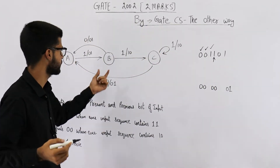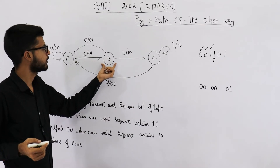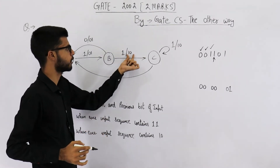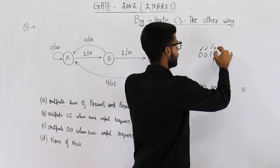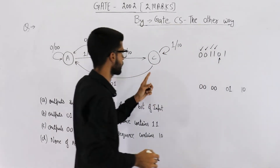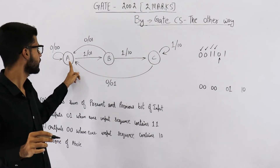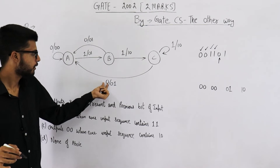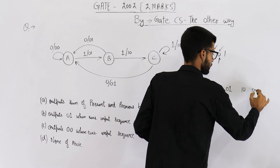The input bit is 1. Upon seeing 1, state B will go to state C. This is the transition and we are going to print 1 0. Now we are at the next bit which is 0 and the state is C. State C goes to state A if input is 0. The input is 0 and we are going to print 0 1.